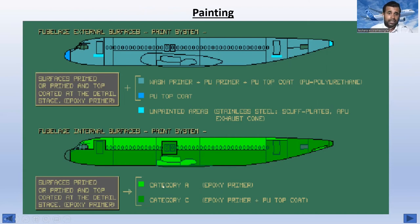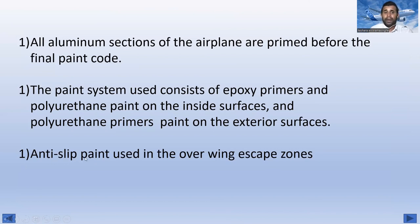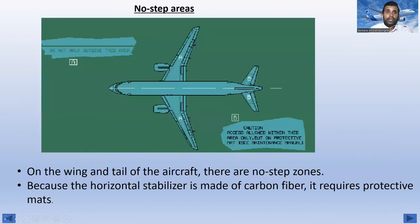For internal surfaces: Category A uses epoxy primer, and Category C uses epoxy primer plus polyurethane top coat. The surface is primed and top-coated at the detail stage with epoxy primer. All aluminum sections of the aircraft are primed before the final paint coat. Paint systems consist of epoxy primers and polyurethane paint on inside surfaces, and polyurethane primers and paint on exterior surfaces. Anti-slip paint is used in the overwing escape zones.